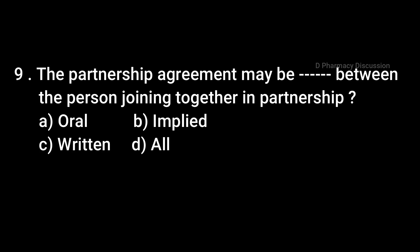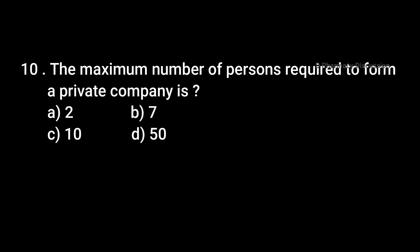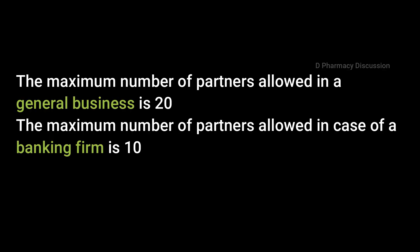Question 9: The partnership agreement may be entered between persons joining together in partnership — Option A: Oral, B: Implied, C: Written, D: All. Correct answer is Option D: All. Question 10: The maximum number of persons required to form a private company is — Option A: 2, B: 7, C: 10, D: 50. Correct answer is Option A: 2. The maximum number of partners allowed in a general business is 20, and in a banking firm is 10.